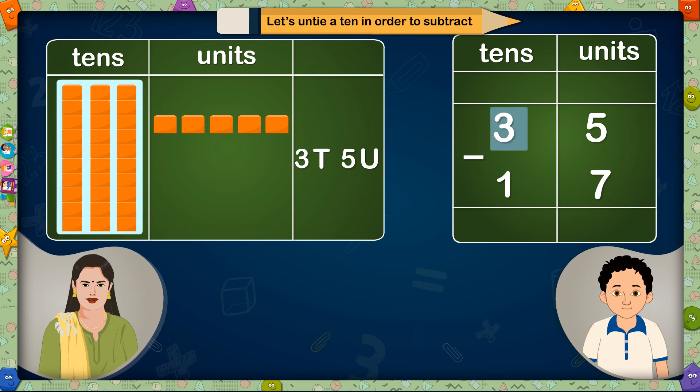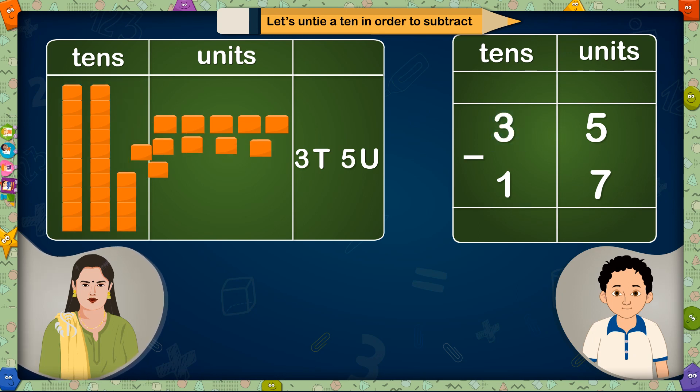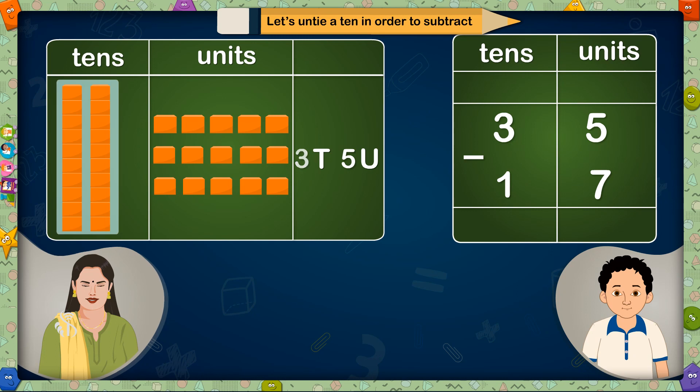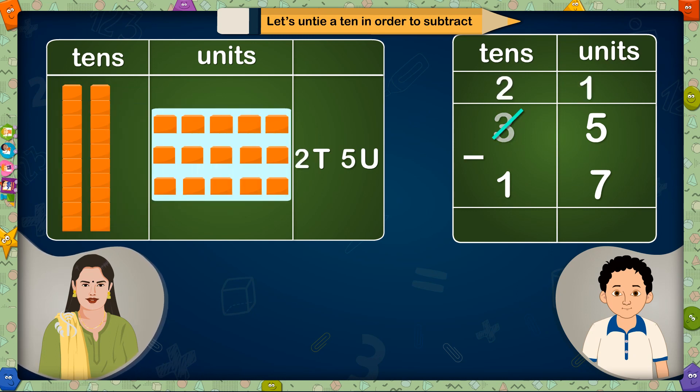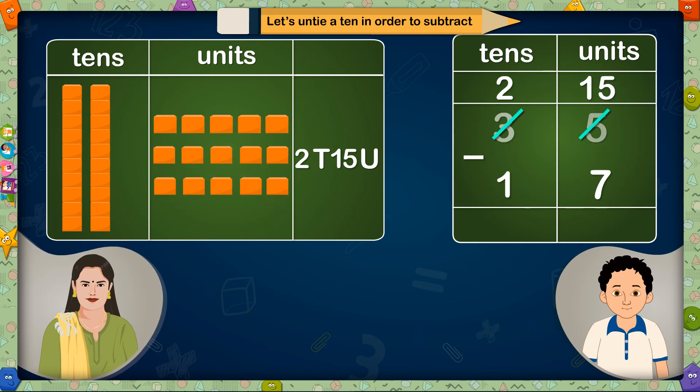there are altogether 3 tens. We will borrow 1 ten in the units place. So only 2 tens will be left over here. And here we get 10 units by untying a ten plus 5 units which will together make 15 units. If we reduce 7 units from 15 units, 8 units will be left.